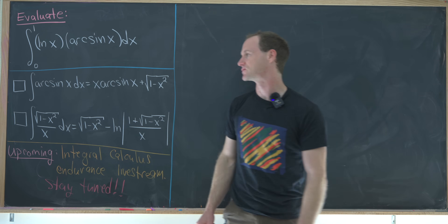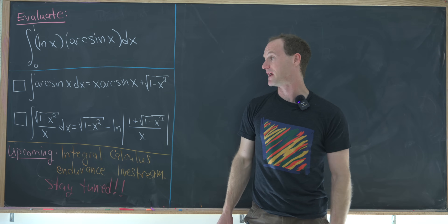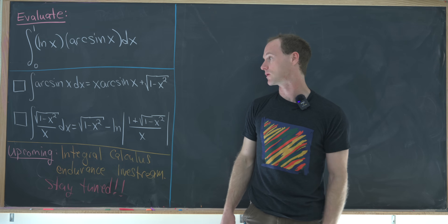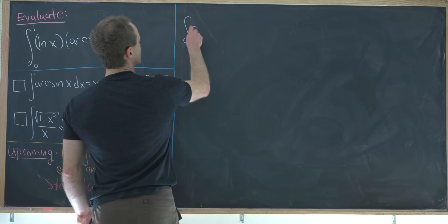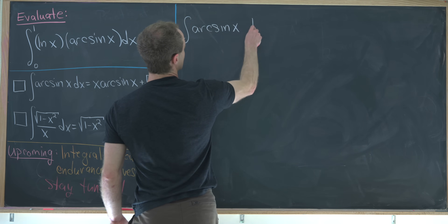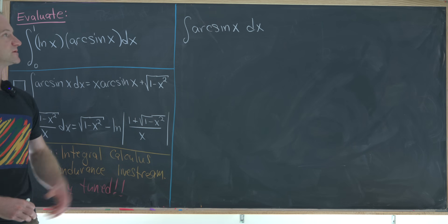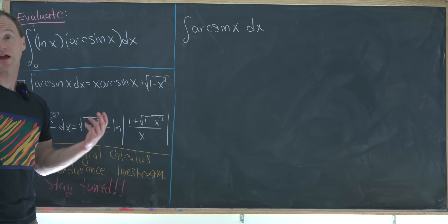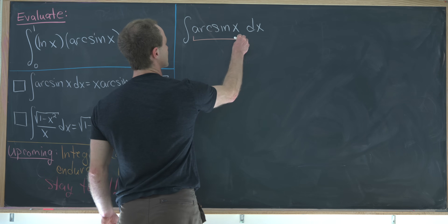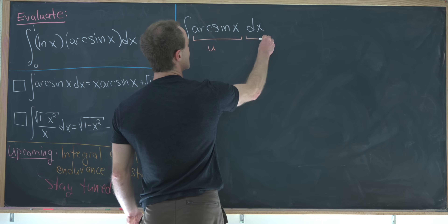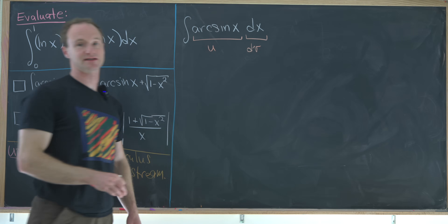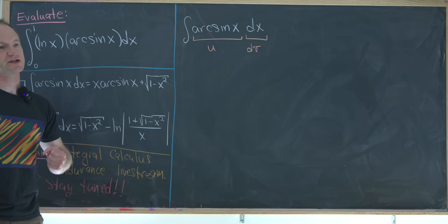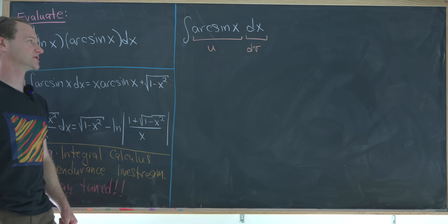That leads us to two tools we'll use. The first is the antiderivative of arc sine. We want to find the antiderivative of the inverse sine of x. Since this is an inverse function, we'll use the standard integration by parts trick: set the function itself equal to u, and dx plays the role of dv. The motivation is that the antiderivative of an inverse function is hard to find, but the derivative is usually well known.